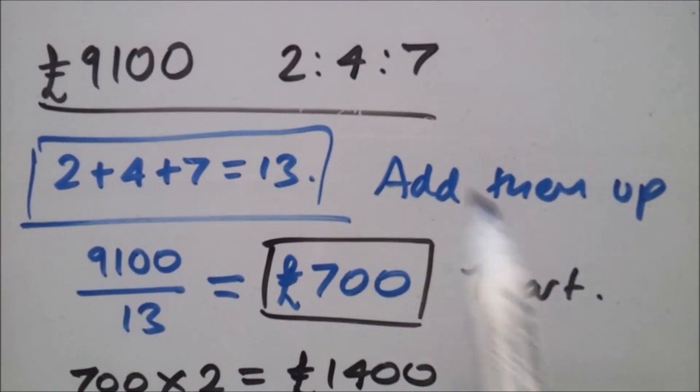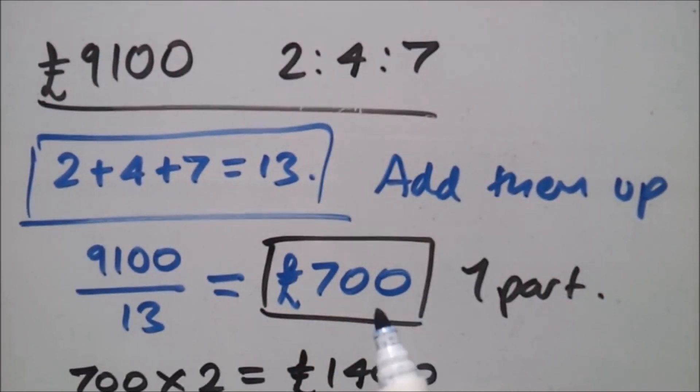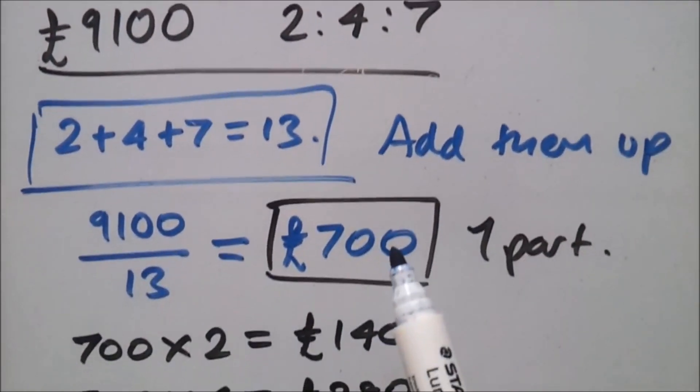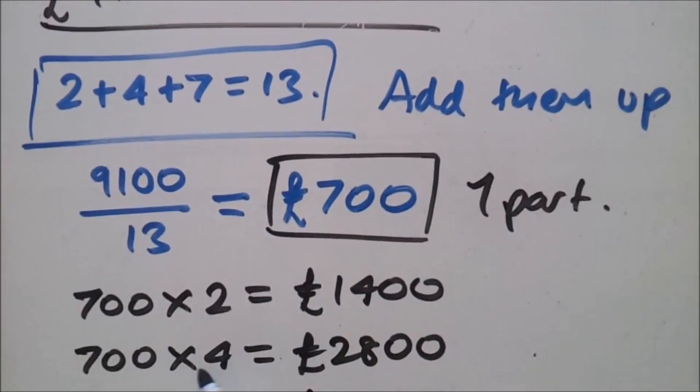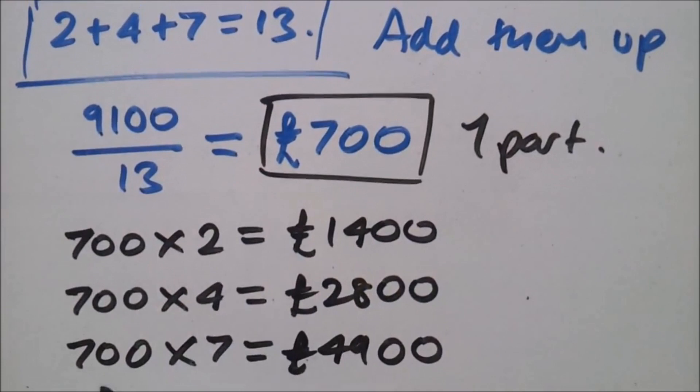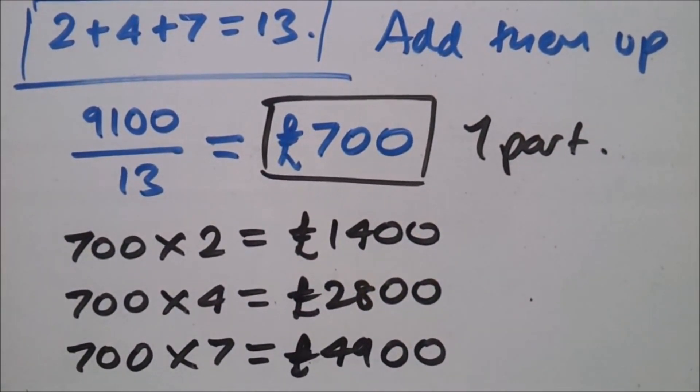Now, for the rest of them, we need to times it by the number of parts. So, for example, 700 times 2 gives you two parts. 700 times 4 gives you four parts. And 700 times 7 gives you seven parts.